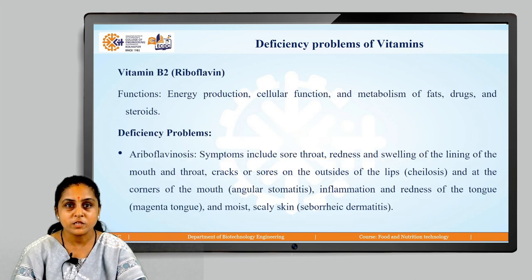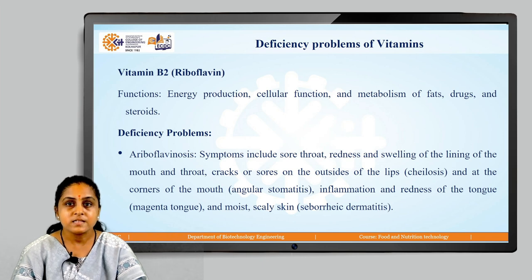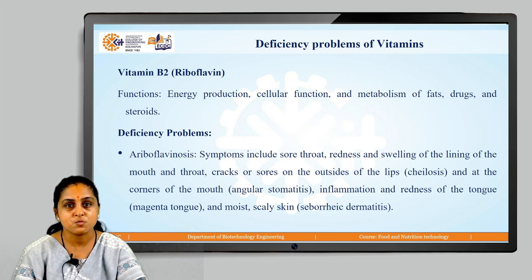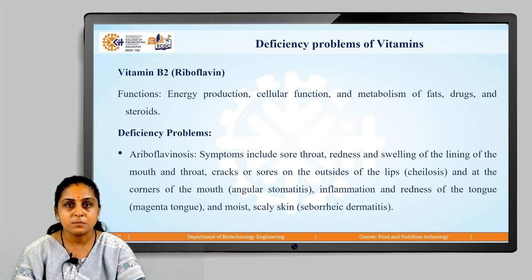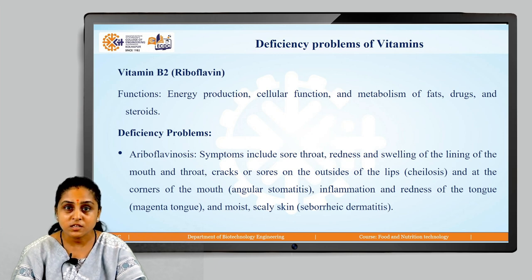Let us move on to vitamin B2, which is also known as riboflavin. The functions associated with vitamin B2 are energy production, cellular function, and metabolism of fats, drugs, and steroids in our body. The deficiency problem with vitamin B2 is called ariboflavinosis. The symptoms include sore throat, redness and swelling of the lining of the mouth and throat, and cracks or sores at the outside of the lips.